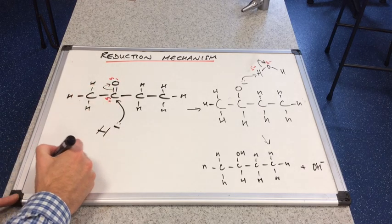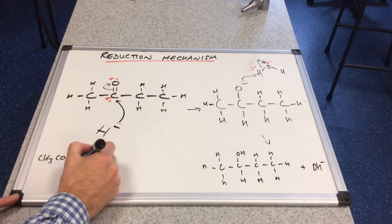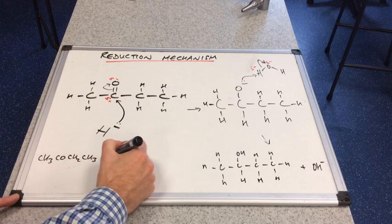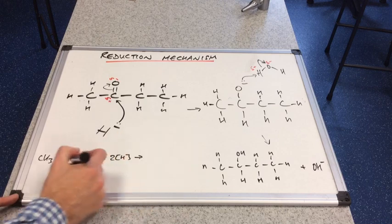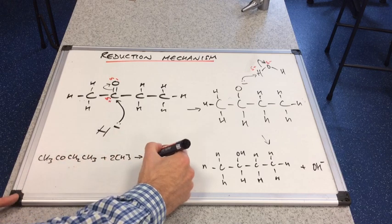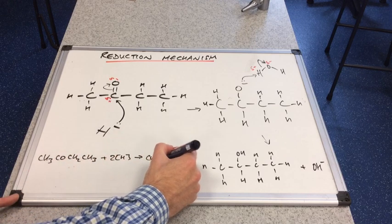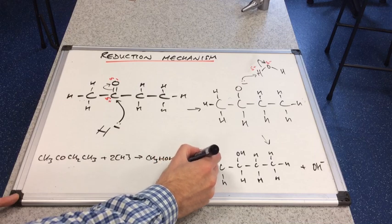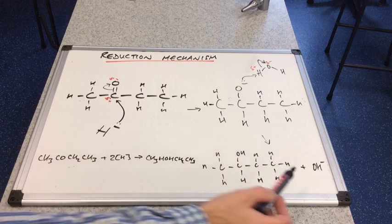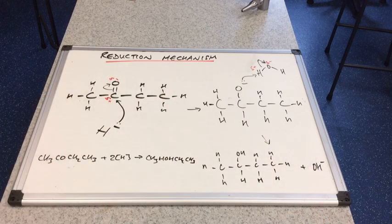We would have CH3COCH2CH3 plus 2 moles of reducing agent oxygen sandwich. So we're going to do CH3CHOHCH2CH3. So the OH- ion just features in the mechanism. It doesn't come into the equation.